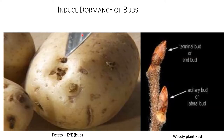Induced dormancy of bud: bud dormancy involves shortened internodes and especially modified leaves called bud scales. Most trees form buds in late summer which remain dormant throughout winter. Levels of endogenous abscisic acid are high in leaves of herbaceous plants — for example, potato.